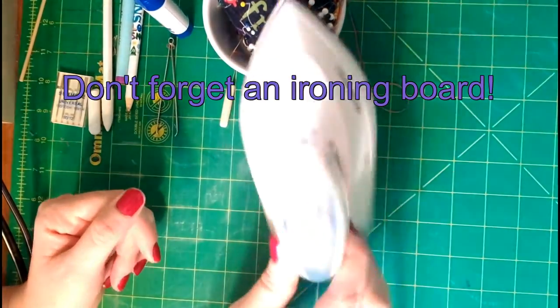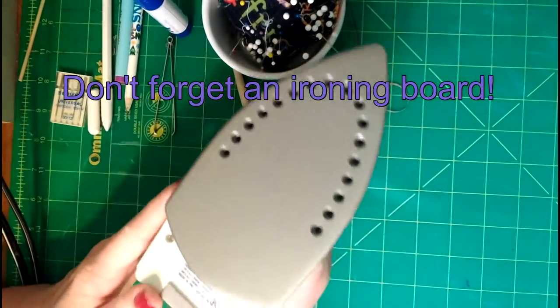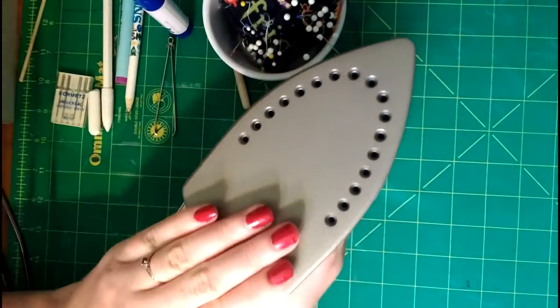Irons are a must for any sewing room. This little one is a Rowenta travel iron. It has a small plate and it's also really light.